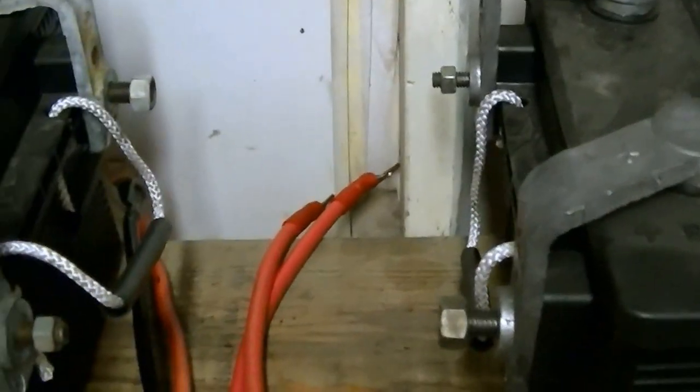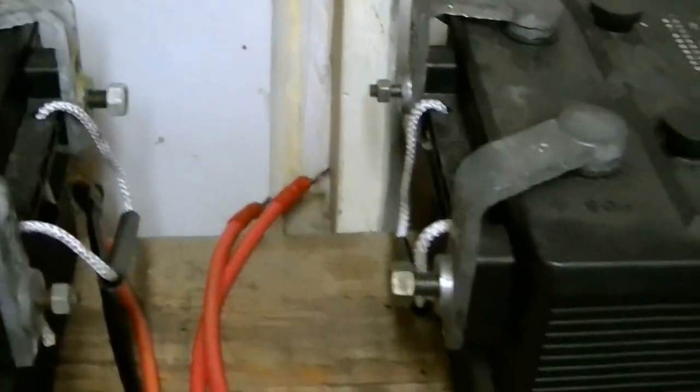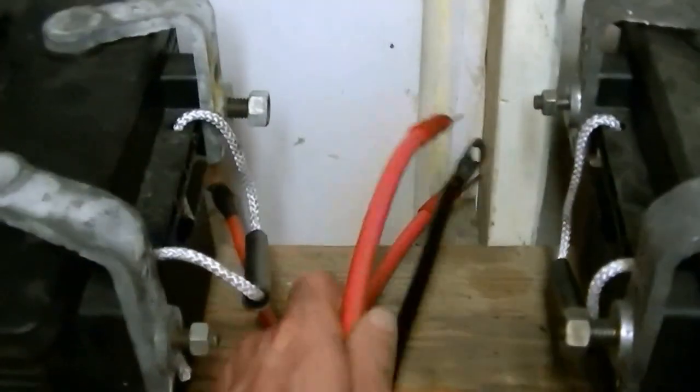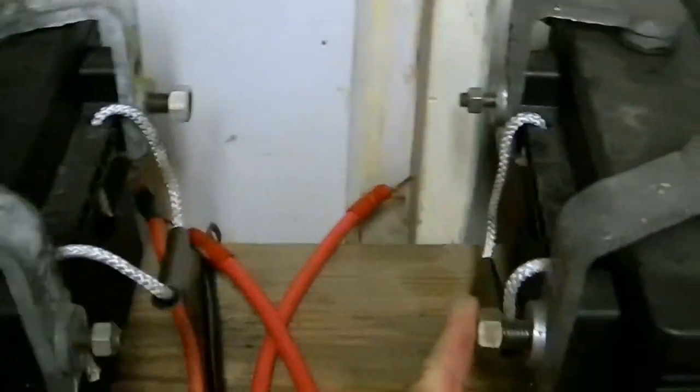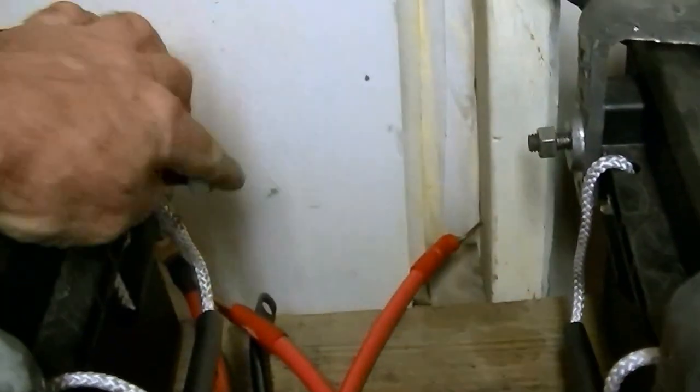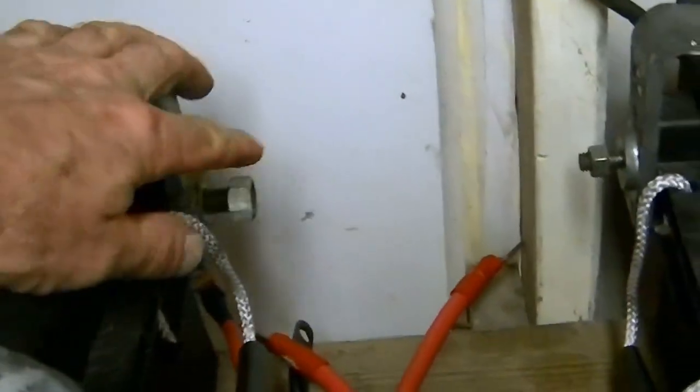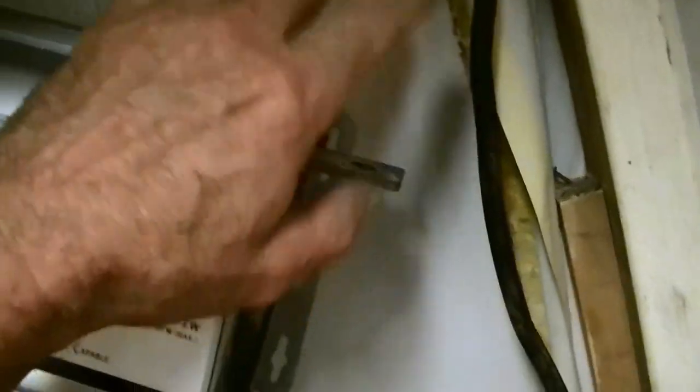Now I've got two 12-volt batteries, so I want to wire these in parallel and not in series. We're going to take a jumper wire and run from positive here to positive over here, and then from positive here we'll go to the charge controller and up to the positive on the inverter. It's pretty simple.